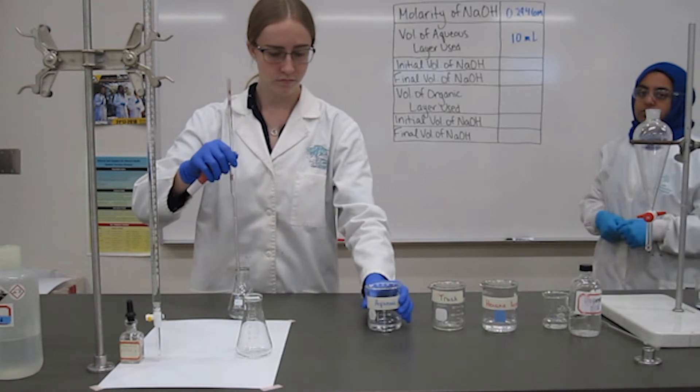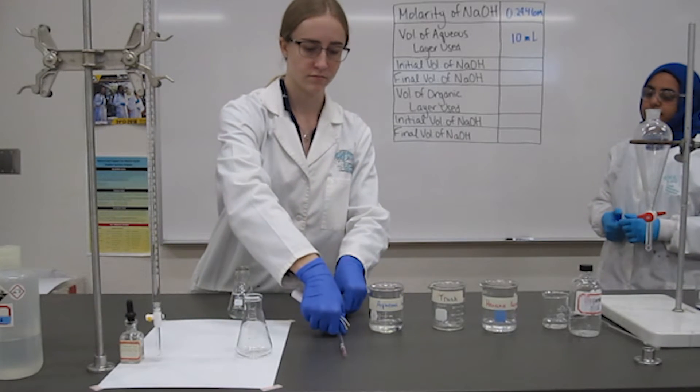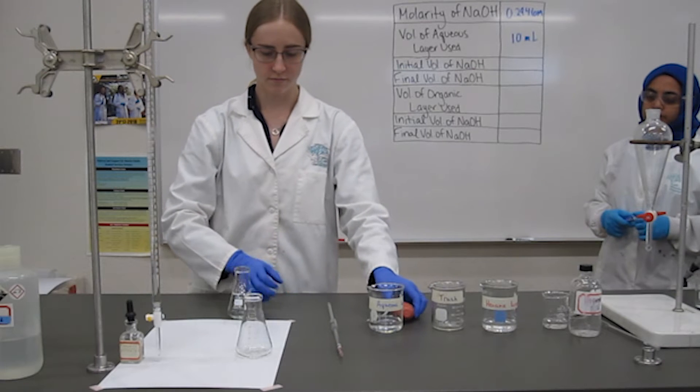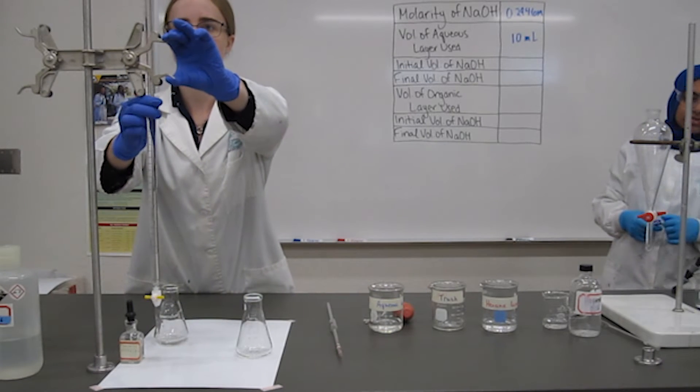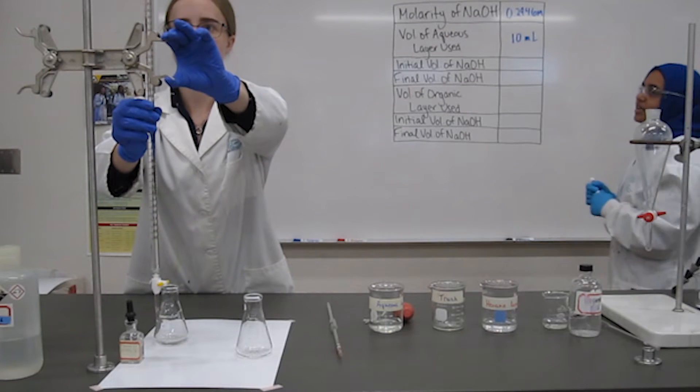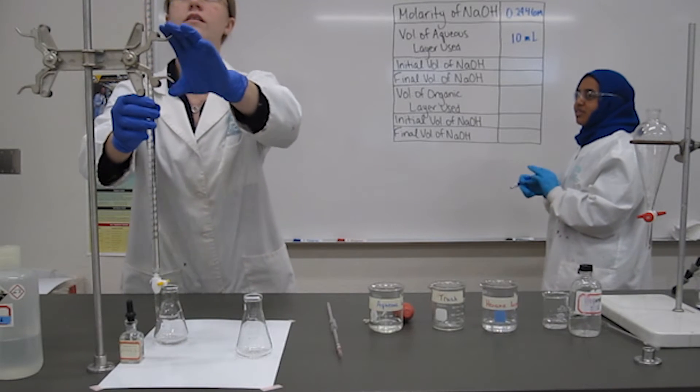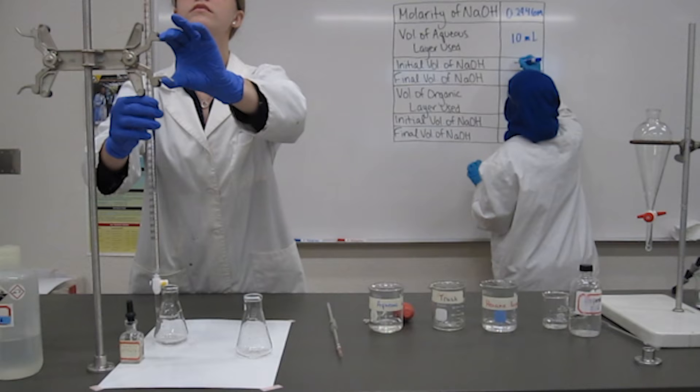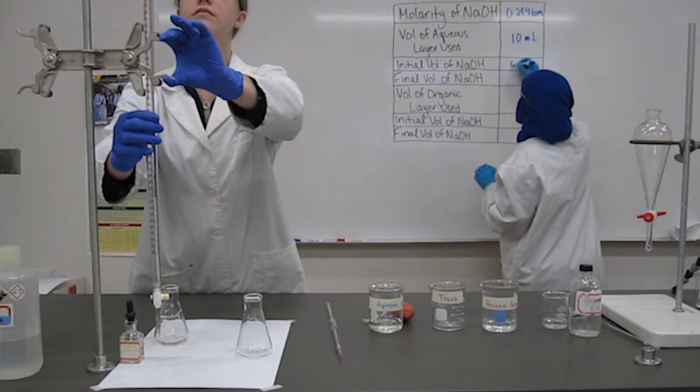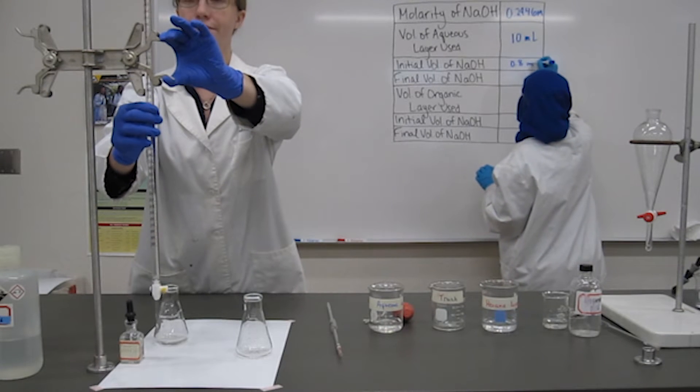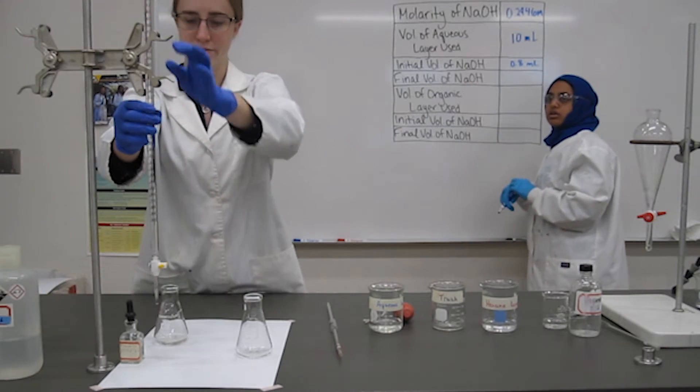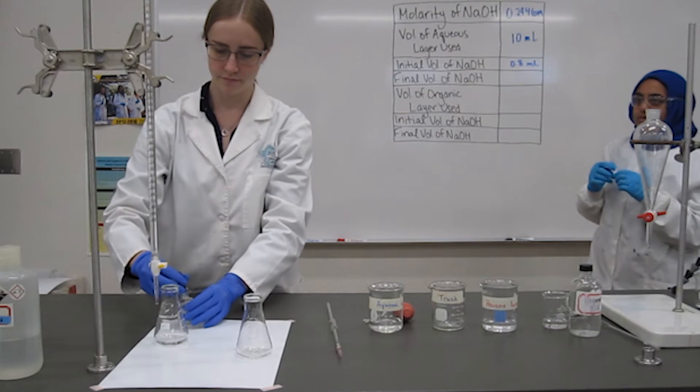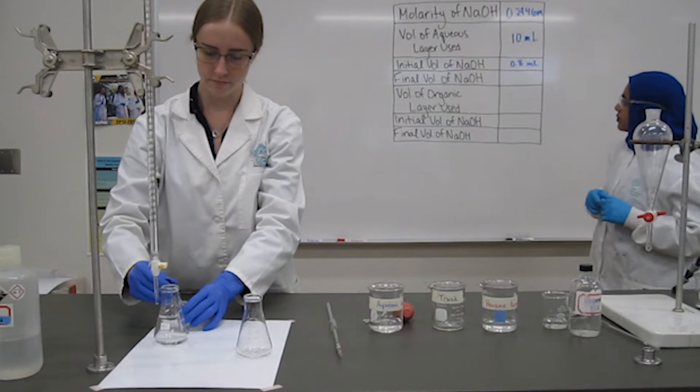Recording the initial level of the sodium hydroxide in the burette is also necessary. Notice the volume of aqueous layer used is exactly 10 milliliters because of the use of the pipette. Recording the initial volume, we can then add our indicator of phenolphthalein and complete the titration.